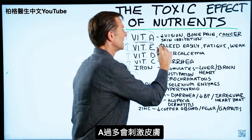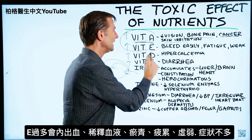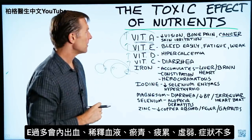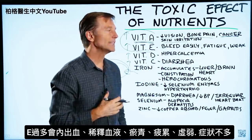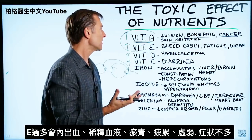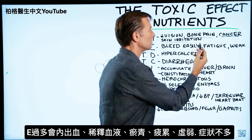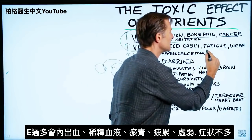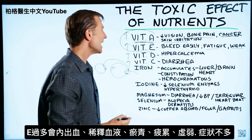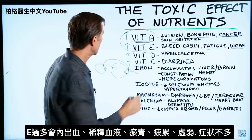Too much vitamin A can also irritate your skin. Too much vitamin E can cause internal bleeding because it acts somewhat like a blood thinner. You might bruise easily. Other symptoms include fatigue and weakness, but there aren't many other symptoms beyond internal bleeding.